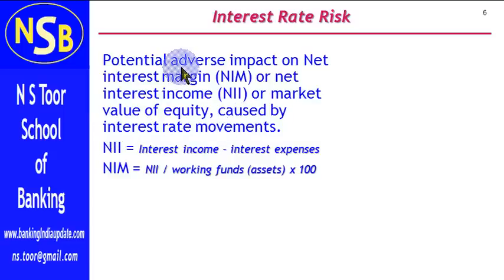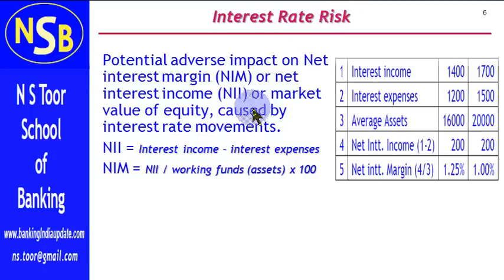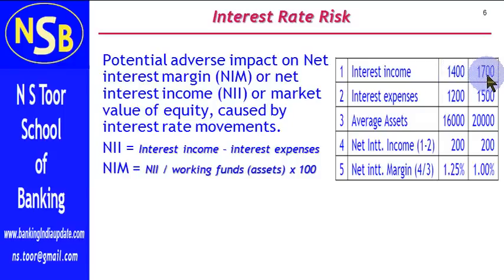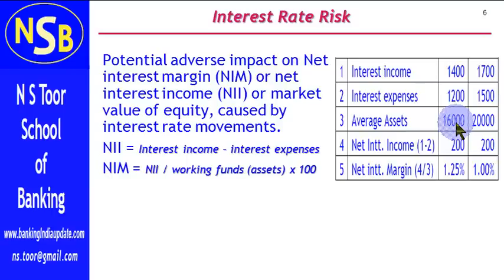Let us see this example. Here we are given information for 2 years. Interest Income in the first year is 1400, and in the second year 1700. Interest Expenses: first year 1200, second year 1500. Average Assets: 16000 in the first year and 20000 in the second year.